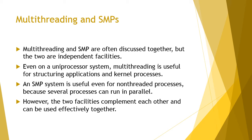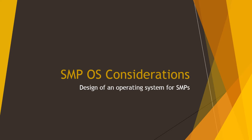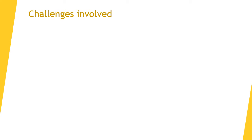However, the two facilities complement each other and can be used effectively together. The same multi-threaded application can be distributed over multiple processors, enhancing performance. In an SMP system, the kernel can execute on any processor, and typically each processor does self-scheduling from the pool of available processes or threads. The kernel can be constructed as multiple processes or threads, allowing portions of the kernel to execute in parallel.